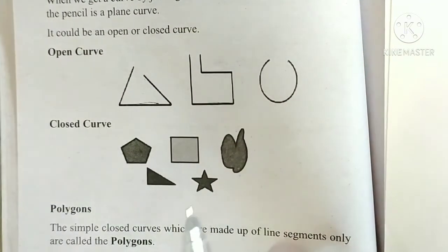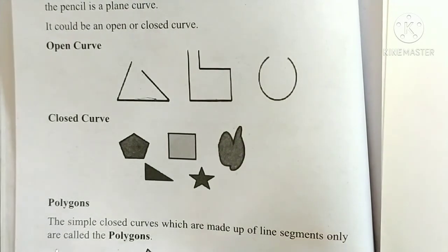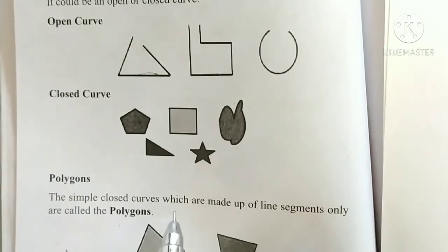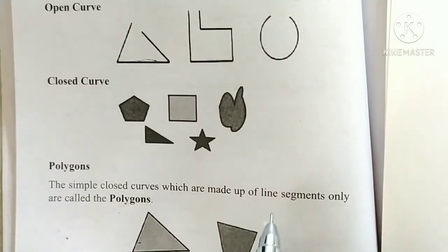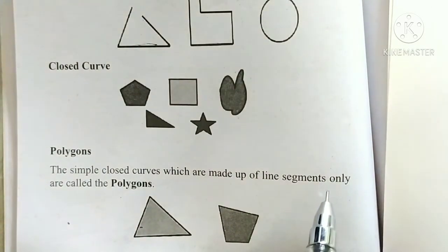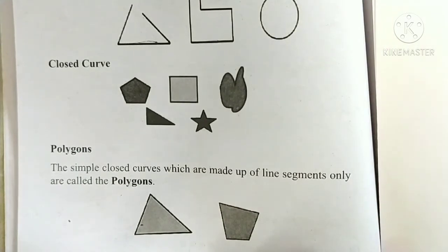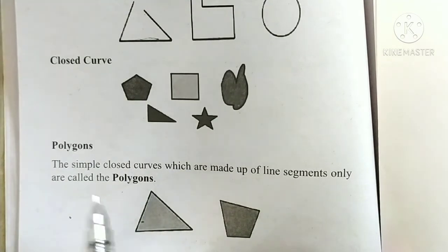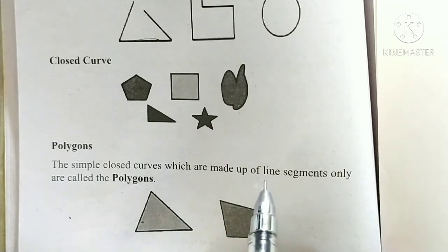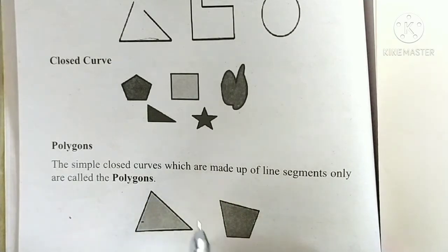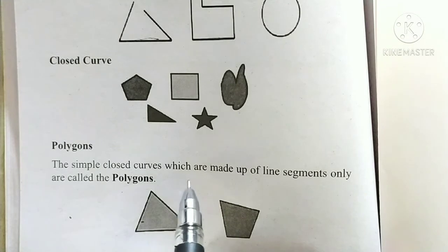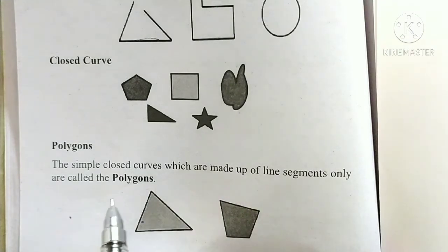Now, polygons. The simple closed curves which are made up of line segments only are called polygons.